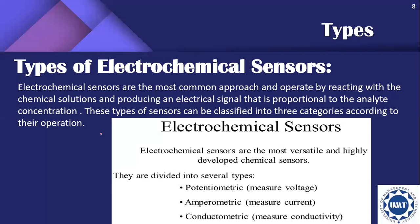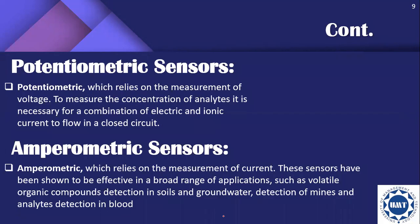There are three types of electrochemical sensors: potentiometric, amperometric, and conductometric. Potentiometric sensors are those which rely on the movement of voltage. To measure the concentration of analytes, it is necessary for a combination of electric and ionic current to flow in a closed circuit.